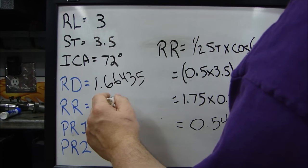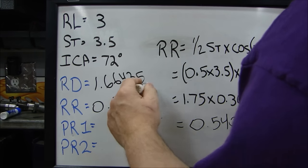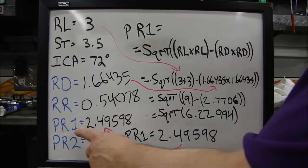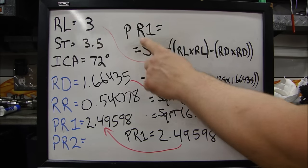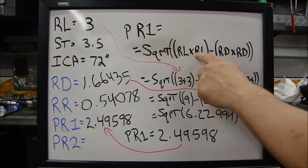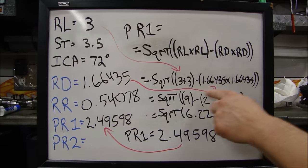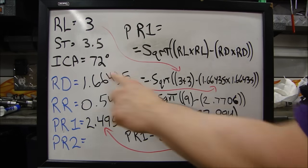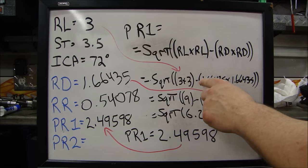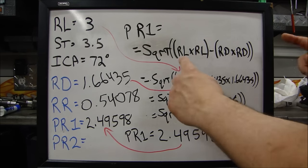Okay, 0.54078. Now we'll calculate the PR1. Okay. Now we're going to calculate the PR1. The PR1 is the square root of the rod length times the rod length. Rod length times the rod length, minus RD times RD. RD times RD. That's where these numbers come from. So rod length and RD.